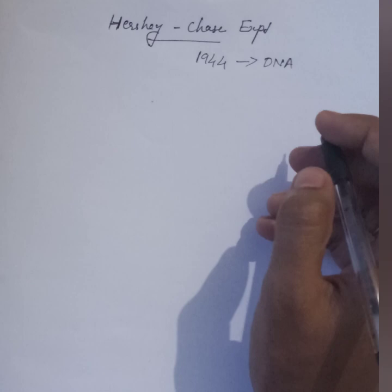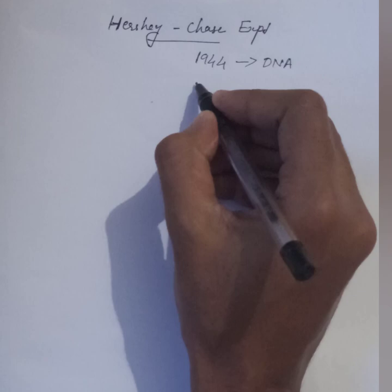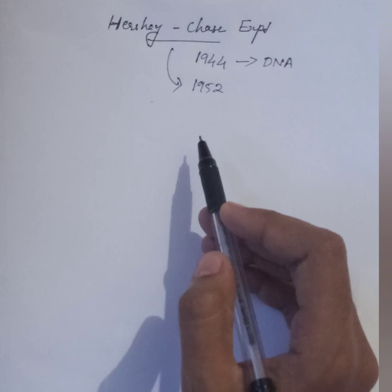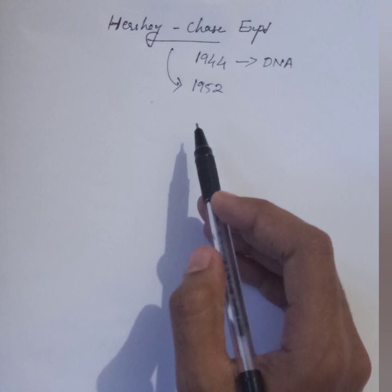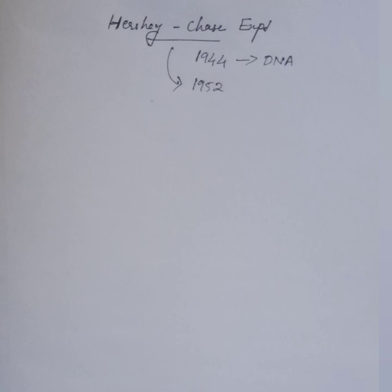At that time people thought that the genetic material is not DNA — it's protein, which has more complexity than DNA or RNA. By the Hershey and Chase experiment it is confirmed that DNA is the genetic material, which was done in 1952, that means seven or eight years after Avery's experiment. In the previous videos I have discussed about the Griffith experiment and Avery's experiment — if you didn't view those, please view them before entering into Hershey and Chase experiment.